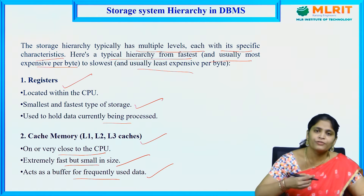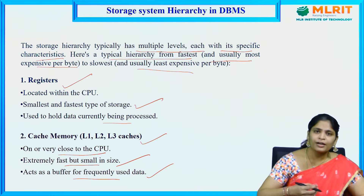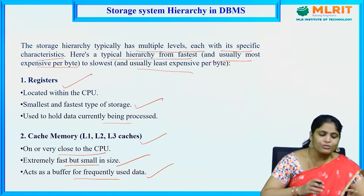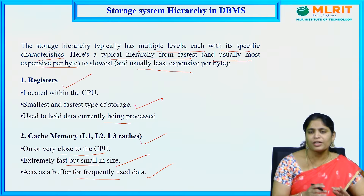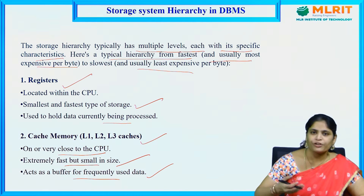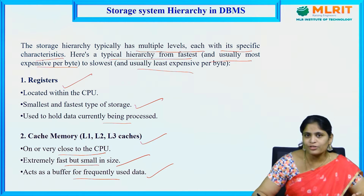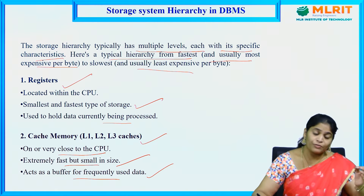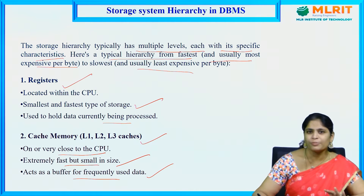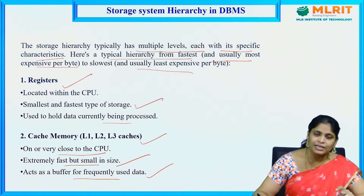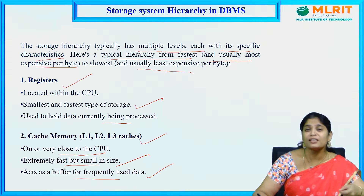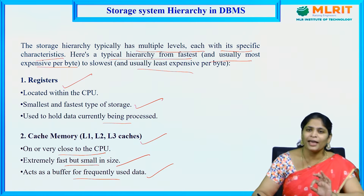If we want to retrieve data that is accessed frequently, that data will be stored in cache memory so we don't need to go to main memory every time. For example, if we use Wynk or Spotify music apps and want to listen to songs, instead of searching by language and movie name every time, we create a playlist. From next time we directly go to the playlist — that is the basic example for cache memory.